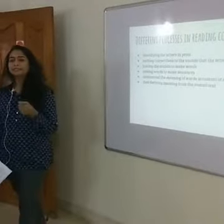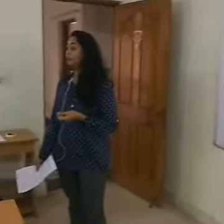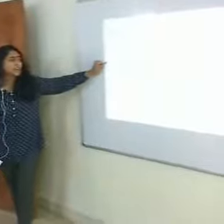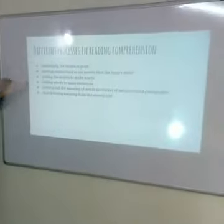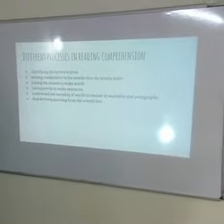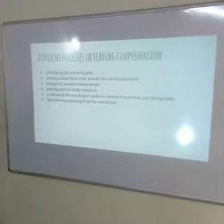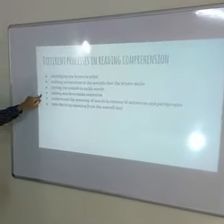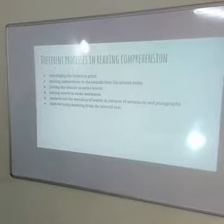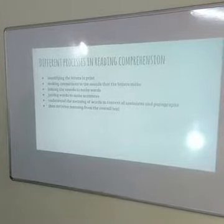After that, I try making connections to the sound that the letters make. For example, in the same letters P, A, N — I need to identify that P makes the sound of P, A makes the sound of A, and N makes the sound of N. Then we try and join the sounds to make words — P, A, N gives us 'pan'. We've already gone through three processes in our mind. After that, we try and join words to make sentences — like 'the pan is hot'.